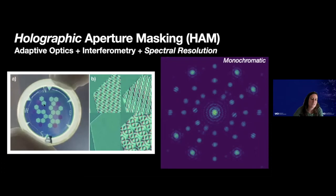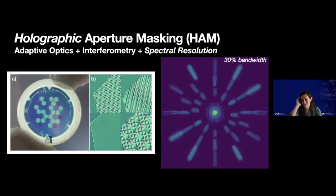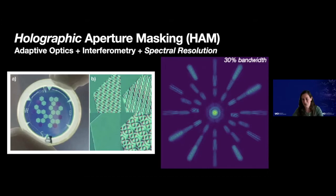This is what the image of a point source looks like through a holographic mask — at a single wavelength versus using a range of wavelengths with some filter bandwidth. Comparing these, the difference is that in the image with bandwidth, you're smearing out your image on your detector. That's because these little patterns act like diffraction gratings — the location where your light shows up depends on the wavelength. That means you can sample this image and actually measure flux as a function of wavelength for the thing you're interested in.